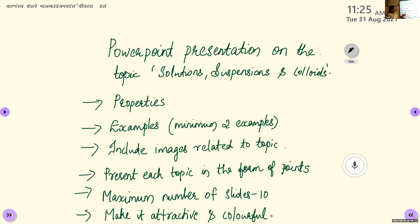The topic is PowerPoint presentation on solutions, suspensions, and colloids. Include properties of each, and examples — minimum two, maximum as many as you like. Include images related to the topic; for example, images of examples like alloys for solid solutions, or colloids divided into different forms. Present each topic in point form, not paragraph. Maximum slides: 10. Make it attractive and colorful.